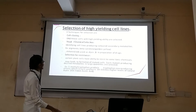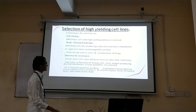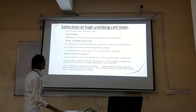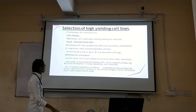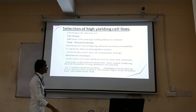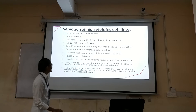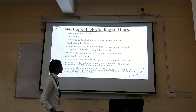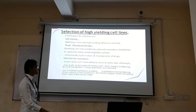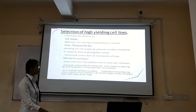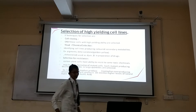Chemical selection involves identifying cell lines that produce secondary metabolites in color, that is pigments like beta-carotene (golden yellow) and shikonin (red), used as dyes and in preparation of drugs. Selection for resistance means certain plant cells that have the ability to resist toxic chemicals may lead to formation of mutant cells, and such mutants producing desired metabolites in large quantities are selected.